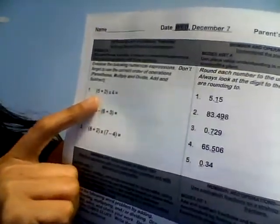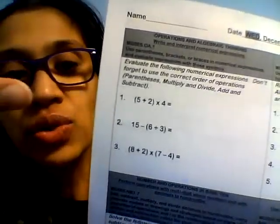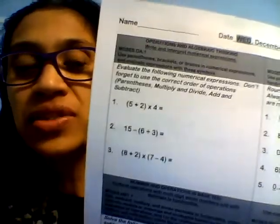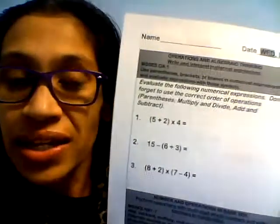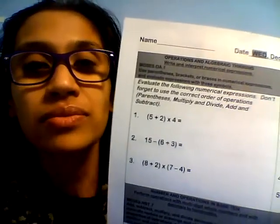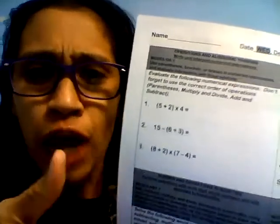It says five plus two, in parentheses, times four. What are we going to do first? We need to do that five plus two first — it's in parentheses. And what's five plus two? That is seven. Then multiply that by four and what do you get? 28. Done with number one.